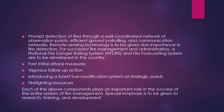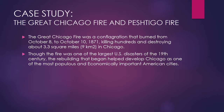Special emphasis is to be given to research, training, and development. Here we have our case studies: the first is the Great Chicago Fire, which will be followed by a case study on the Peshtigo Fire. The Great Chicago Fire was a conflagration that burned from October 8th to October 10th, 1871, killing hundreds and destroying about 3.3 square miles — around 9 square kilometers — in Chicago.